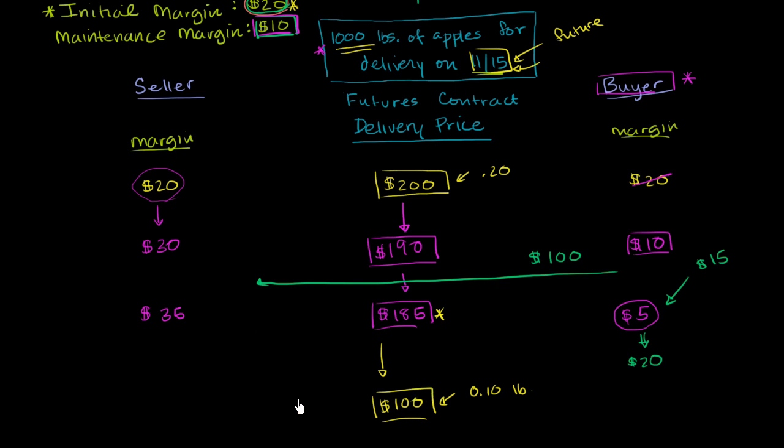So the true economic value he gets is $200 no matter what, for his 1,000 pounds of apples or $0.20 a pound. You can imagine the other scenario. What if the delivery price, as we get closer and closer to delivery date, goes up? If it goes to $300, $300 per 1,000 pounds.